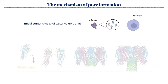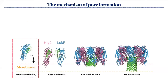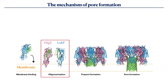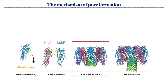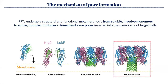Briefly, the mechanism of pore formation begins with toxins released as water-soluble units by bacteria, which then bind the membrane. The two components interact on the membrane to form a heterodimer, and then the heterodimers interact to form an octamer — an oligomer leading to a so-called prepore where the stem in green is partially refolded. This then leads to the final transmembrane channel where all the stems are completely folded.